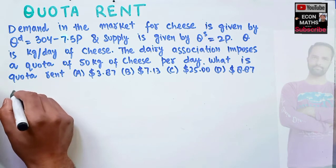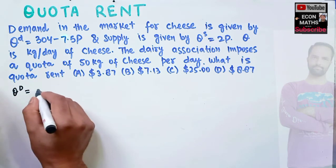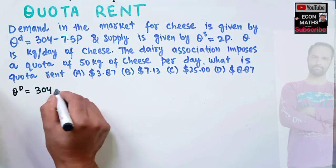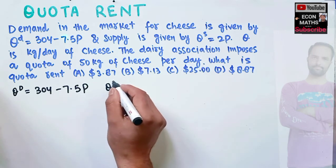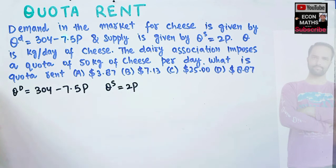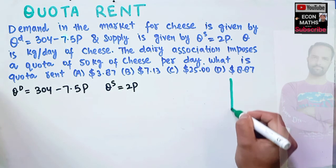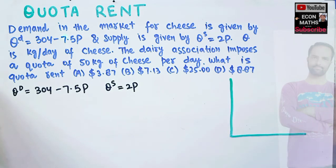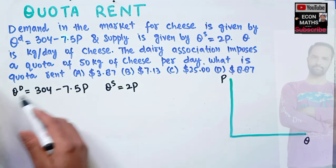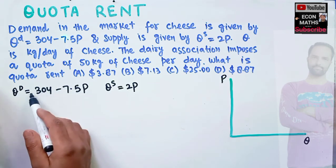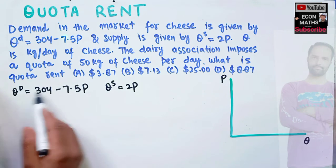We are given the demand function Qd = 304 - 7.5p and the supply function Qs = 2p. Let us first draw the graph to make sense of this — we have quantity of cheese on the horizontal axis and price on the vertical axis. Now let us find the inverse demand and inverse supply functions by solving for p.